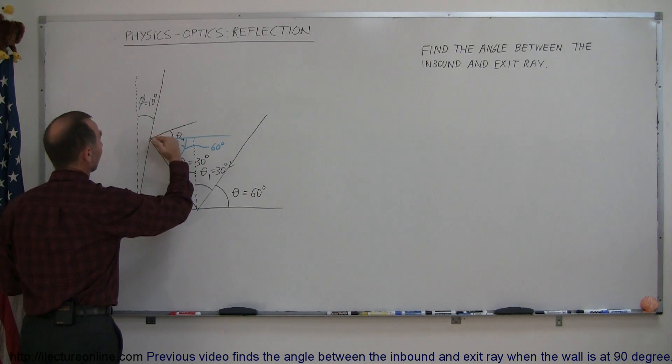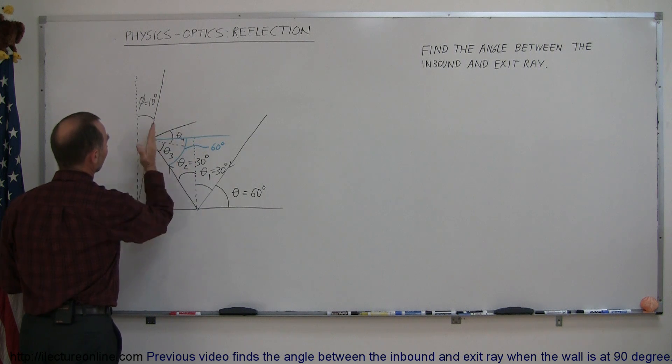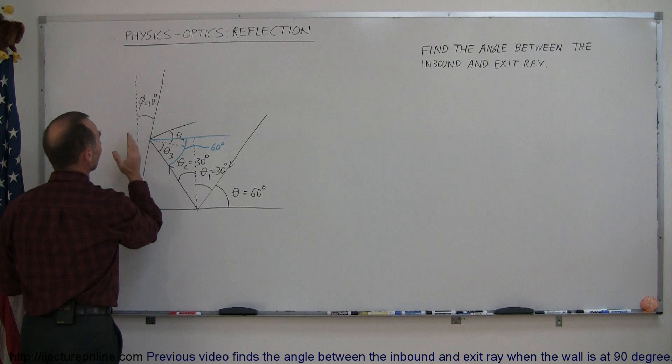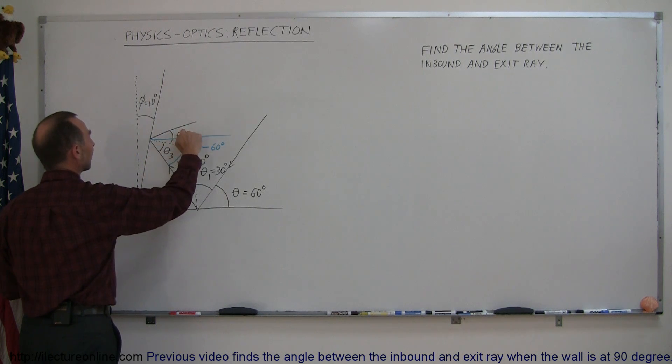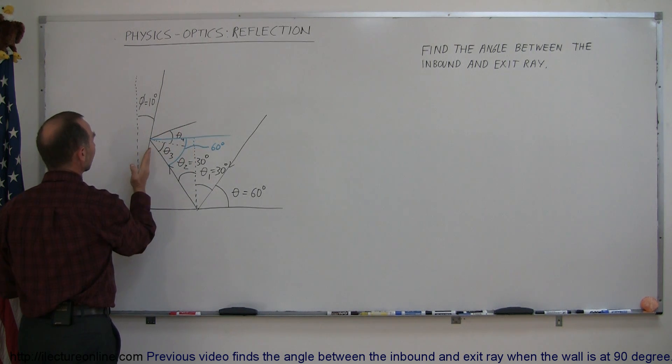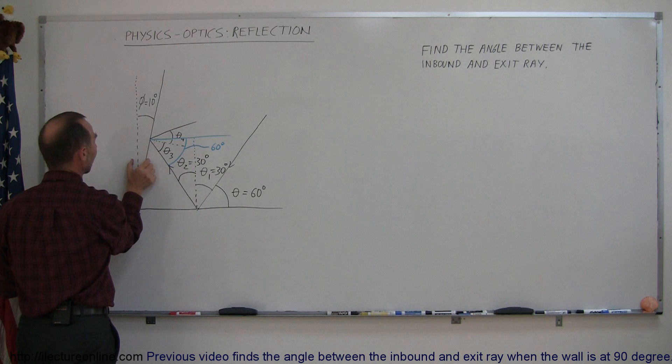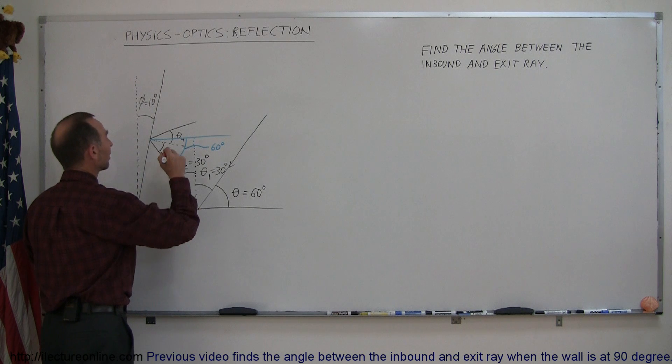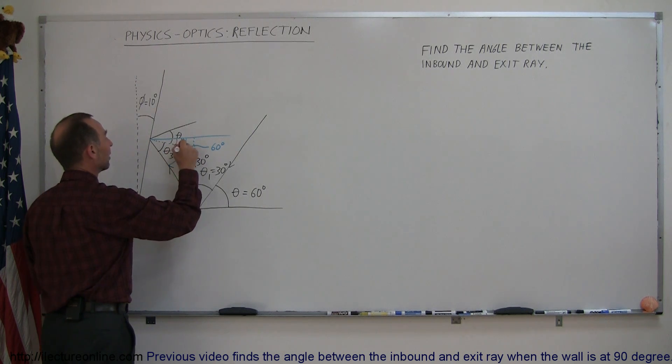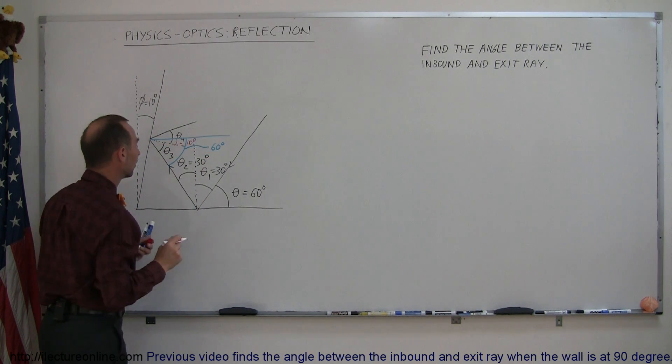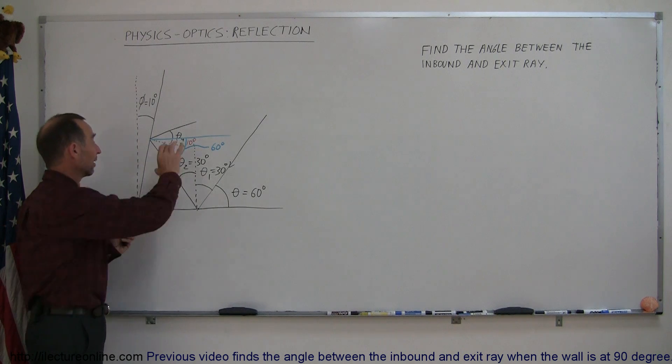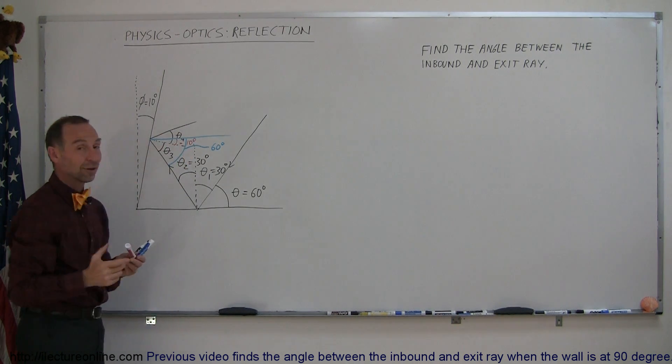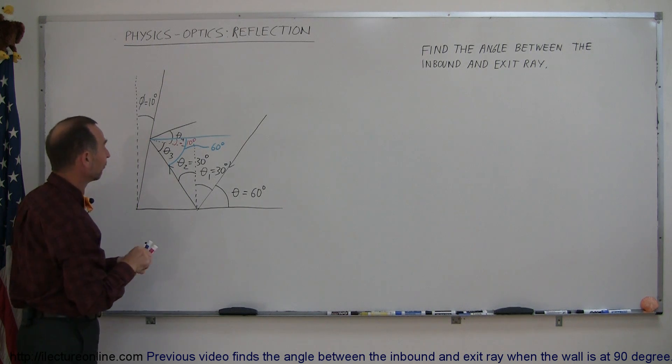Well if this normal line is perpendicular to this and this line here is perpendicular to that, then the angle included by this line and this line must equal the angle included by this line and this line. And if this angle is 10 degrees that means this angle must be 10 degrees. Well then if this angle is 60 and this angle is 10 then theta sub 3 must therefore be 60 minus 10 or 50 degrees.